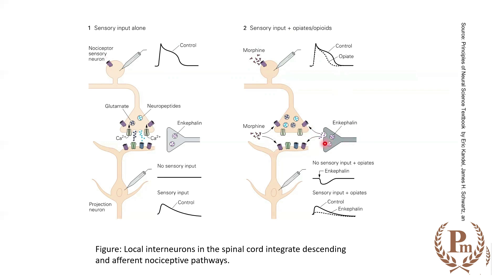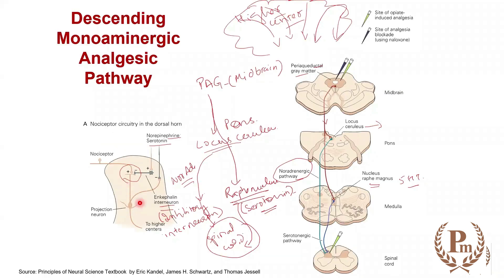Whether you stimulate the enkephalinergic neurons endogenously or give exogenous opioids, what you do is block the sensory input and reduce stimulation — causing hyperpolarization. As a result, the extra EPSPs in the projection neuron are reduced. Opioids — whether endogenous (released by the descending analgesic pathway) or exogenous — block the channels, preventing depolarization or reducing its magnitude, so the impulses from projection neurons are reduced and the person does not feel pain.